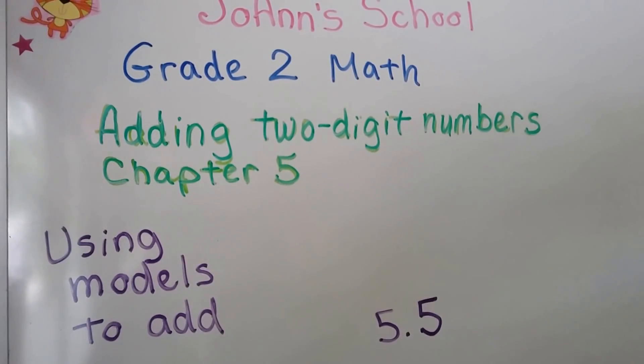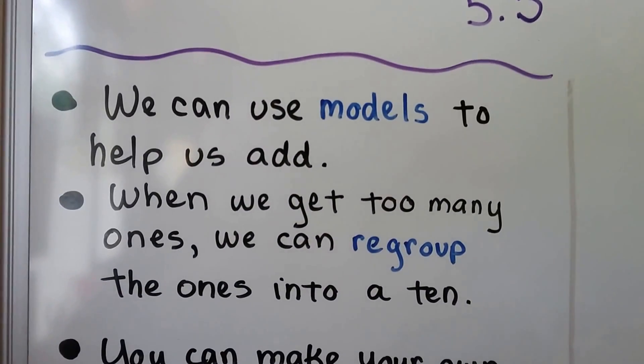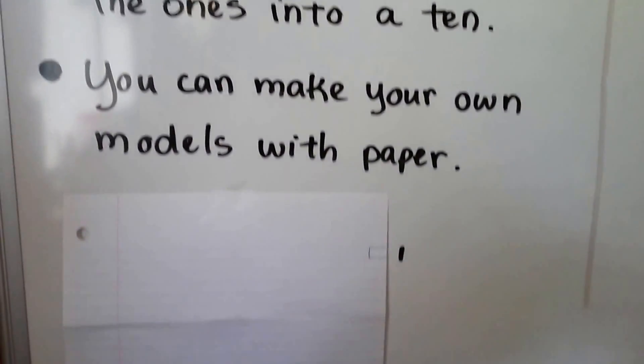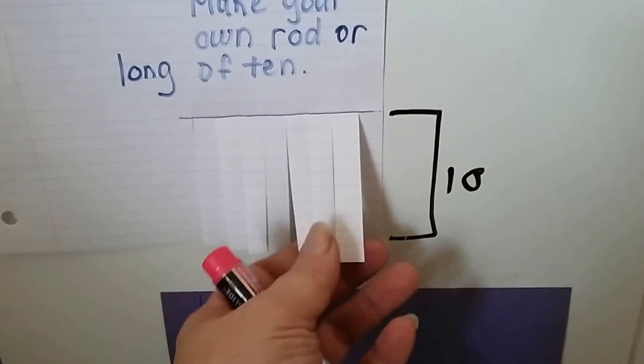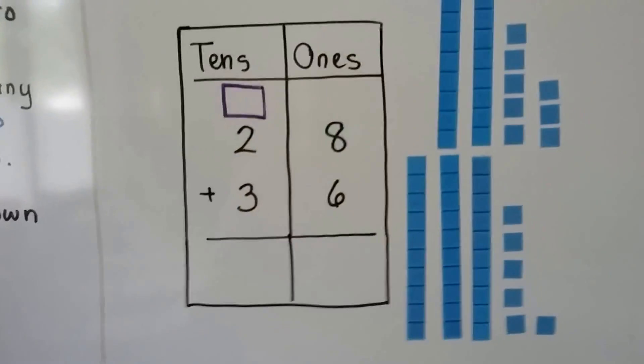Using models to add — lesson 5.5. We can use models to help us add when we get too many ones. We can regroup the ones into a ten. You can make your own models with paper — just use school paper and make your own rod, or a long of 10. Each one of these is 10 units. You can use construction paper and make your own long of 10, and cut them separately to make ones.